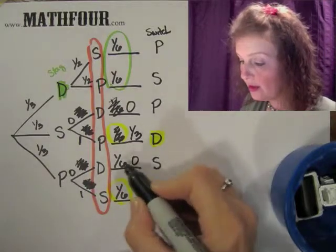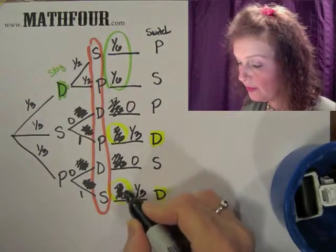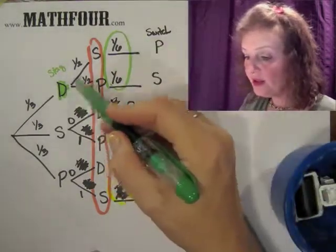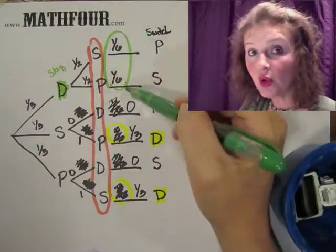Again, one-third times zero is zero. And one-third times one is one-third. Now notice, this is if you stay. You still have one-sixth plus one-sixth or a total of one-third.